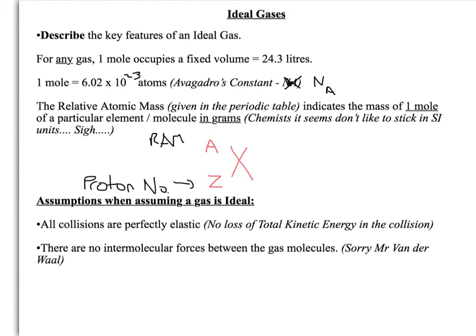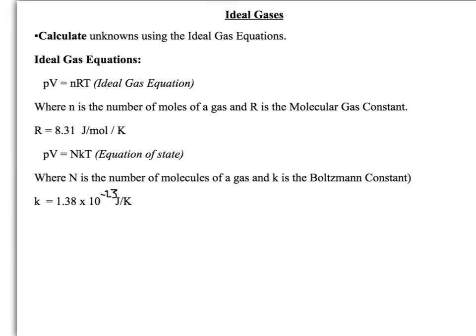Let's have a look at the ideal gas equations. There are two, depending on what information you've been given. This one, PV equals nRT, is your ideal gas equation. That deals with situations where you've been given or can calculate the number of moles of a gas, and you can use the molar gas constant to convert, and that's your R there.